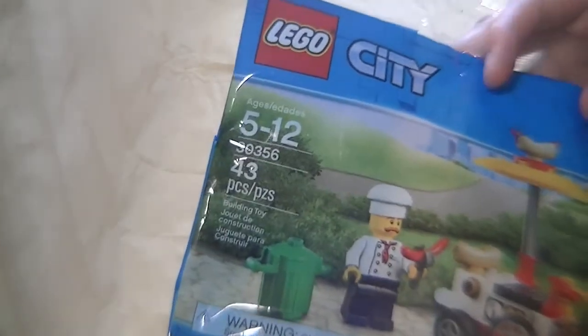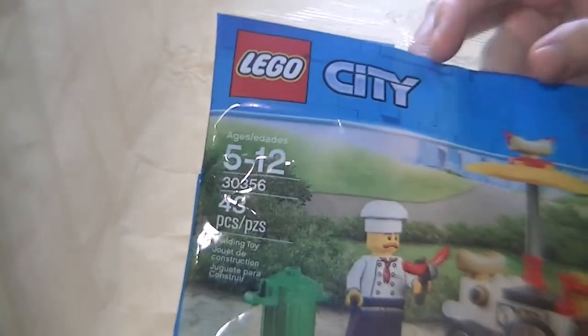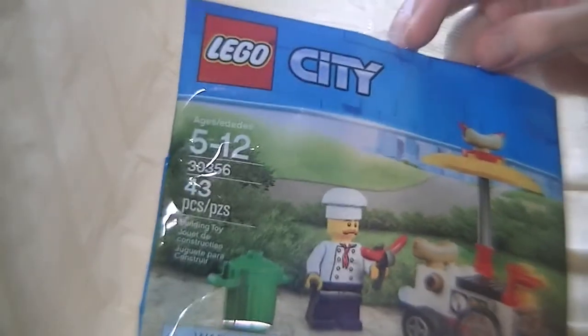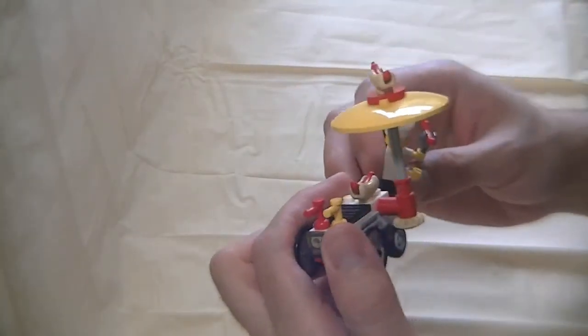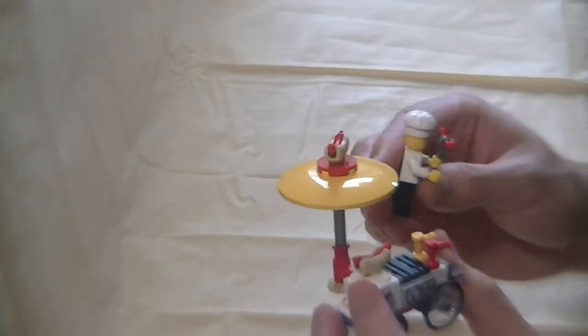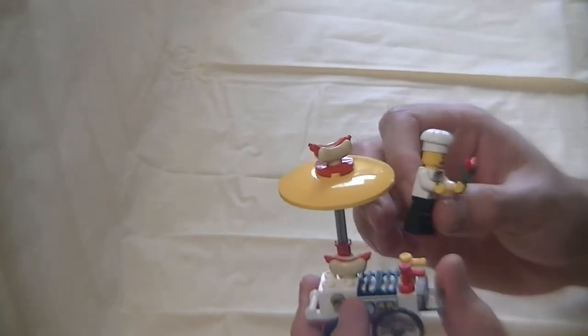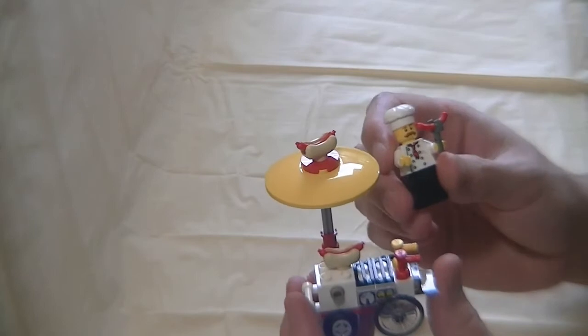This Lego City set comes in a poly bag as you can see, here's the hot dog stand guy. Since I got this set I decided, why not build him a restaurant? Let's say he has done really good selling hot dogs and can open his own restaurant.